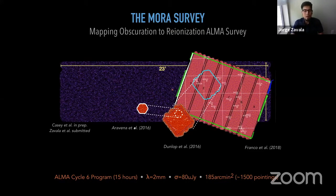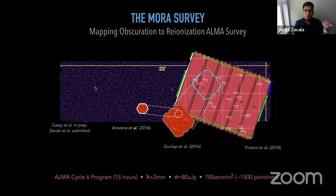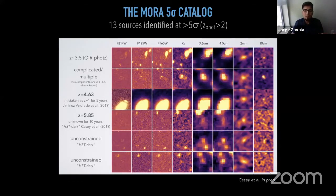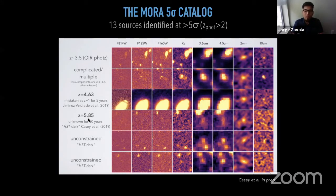This is one of the reasons we proposed the MORA survey — the Mapping Obscuration to Reionization ALMA Survey — which is the first ALMA blind map at a wavelength of 2mm. It covers a relatively large area of 185 square arcminutes compared to other ALMA surveys, observed during ALMA Cycle 6. We detected a sample of 13 sources above 5-sigma. We have spectroscopic redshifts for some of them; for example, one galaxy is at z=5.8. Essentially all detected galaxies are above redshift 2. We used this sample to build the 2mm number counts and constrain our model and infrared luminosity function.